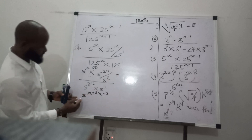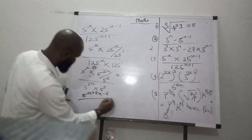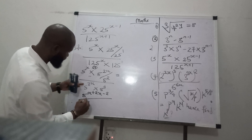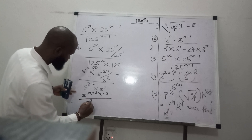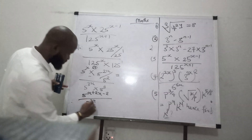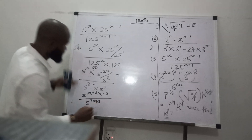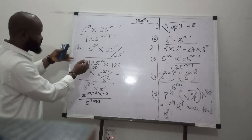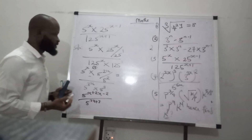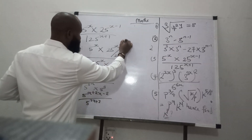This whole thing means this, okay? So divided by 5 raised to the power of 3x — multiplication is addition — so we can say plus 3. That is what this whole thing means. I hope you got me. So we can go ahead.